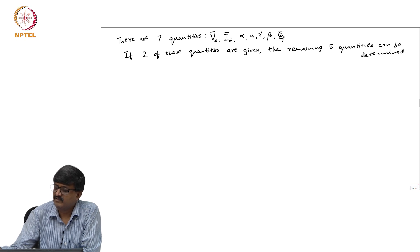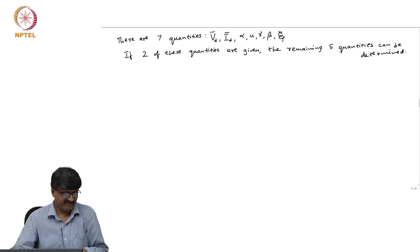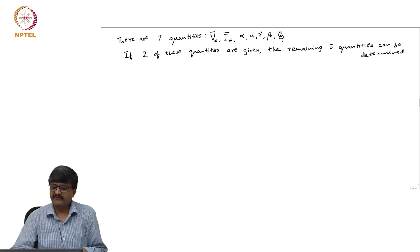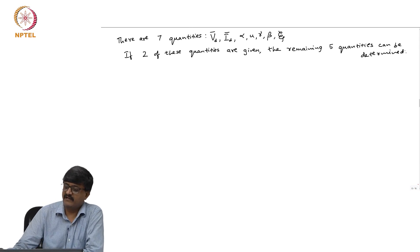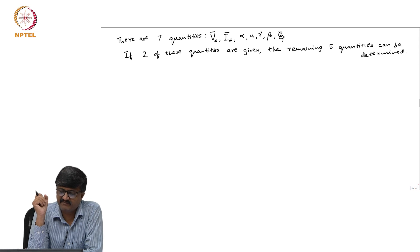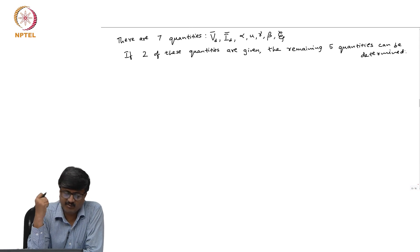We can use the different equations that we have derived to find the values of these 5 quantities from the given values of 2 quantities.